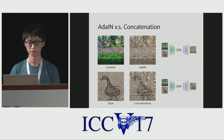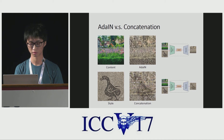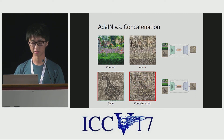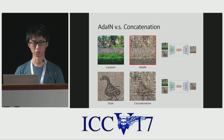A natural question is: instead of using AdaIN, can we simply concatenate the style and content features and feed them to the decoder? We actually tried that, and the results are not satisfactory. With concatenation, the decoder is not able to disentangle style from content — the output image still contains the content structure of the style image. With AdaIN, the decoder only extracts the style and ignores the spatial arrangement of the style image, which leads to much better results.